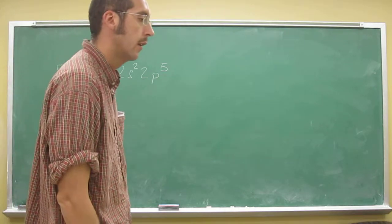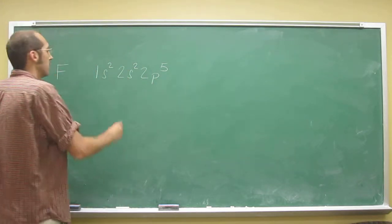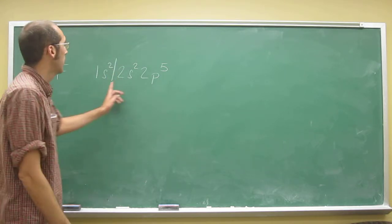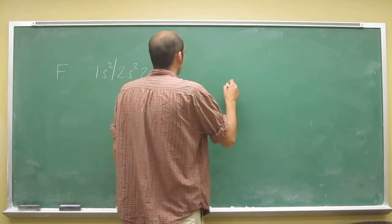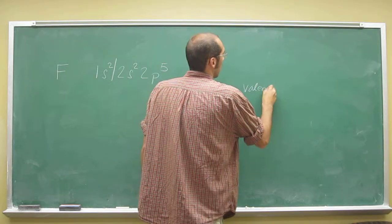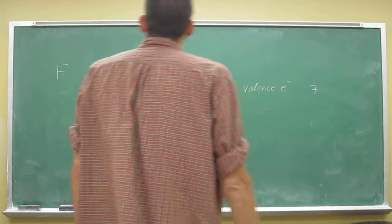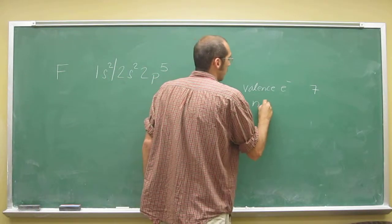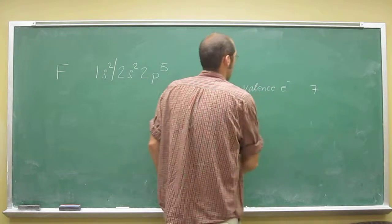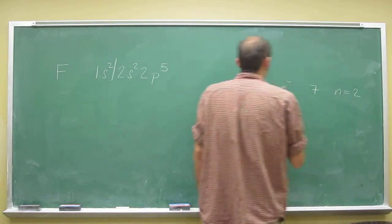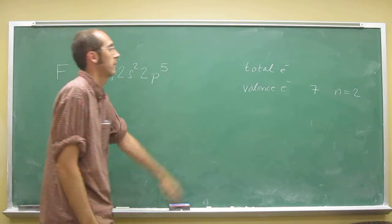So that's the full electron configuration. Now it asks: how many valence electrons does fluorine have? You just look at the last period to get the valence electrons — energy level 2, n=2. So valence electrons is 7. What's the energy level of these electrons? The energy level is 2. What's the total number of electrons? 2 + 4 + 5 = 9.